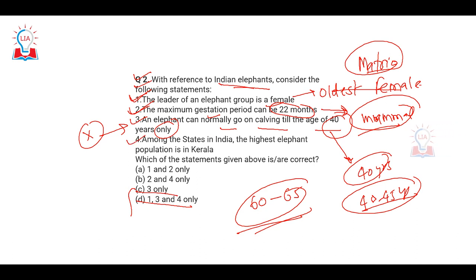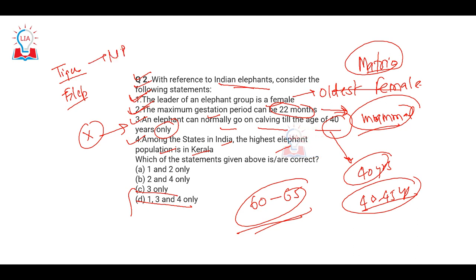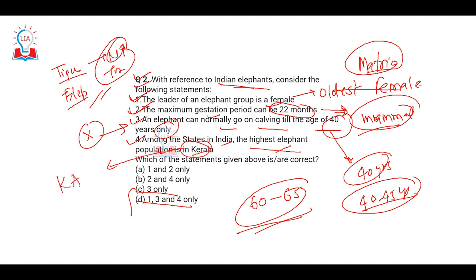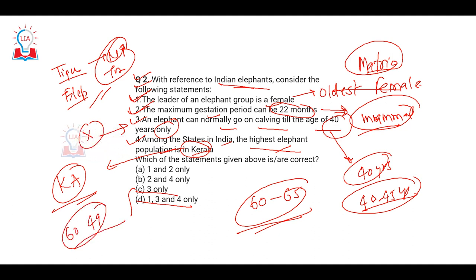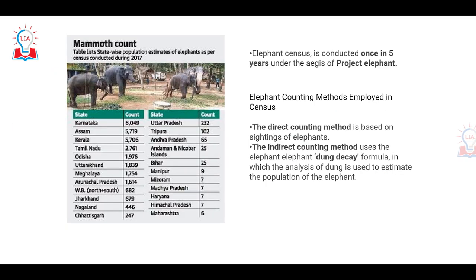Fourth statement: among the states in India, the highest elephant population is in Kerala — this is incorrect. The highest elephant population is in Karnataka. Karnataka leads with around 6,049 elephants, followed by Assam and Kerala in a neck-to-neck competition. So the fourth statement is also incorrect. The right answer is statements 1 and 2 only.